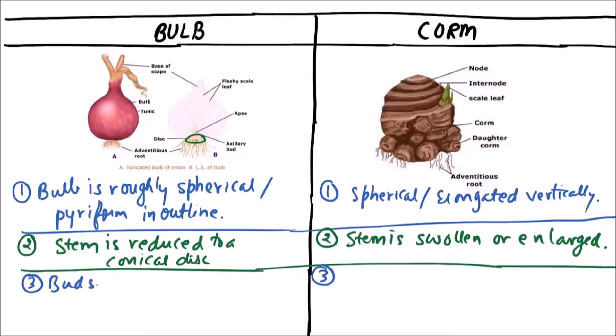Buds in bulb are internal, while in case of corm, buds are borne externally.